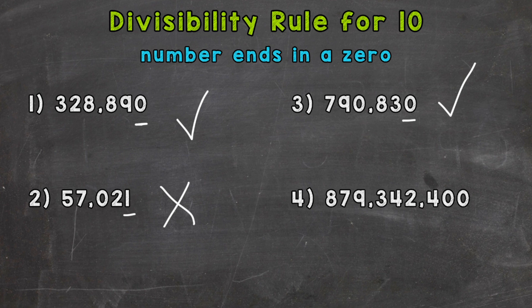Lastly, 879,342,400. Does it end in a zero? Yes. Therefore, it's divisible by 10.